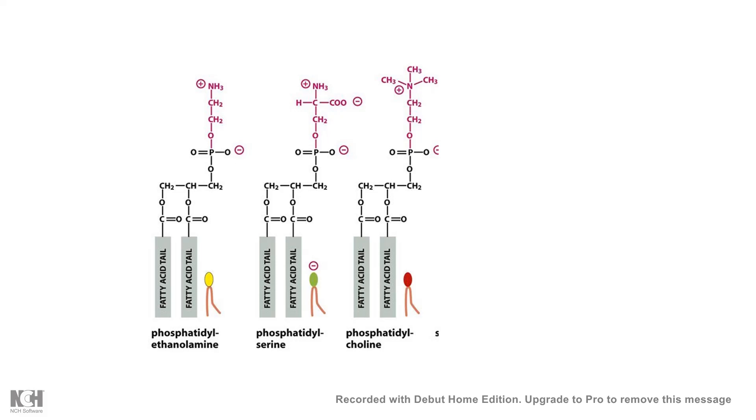For example, if the head group is serine, it is phosphatidylserine, or if the head group is choline, it is phosphatidylcholine.